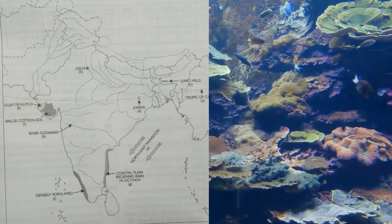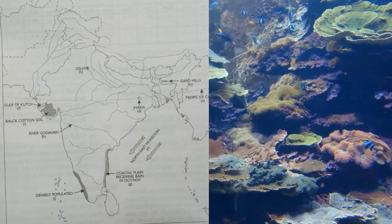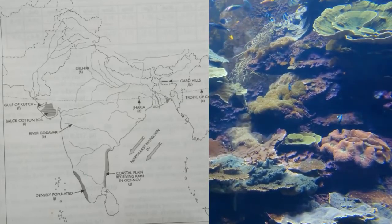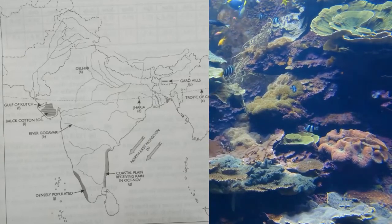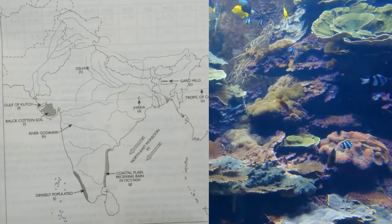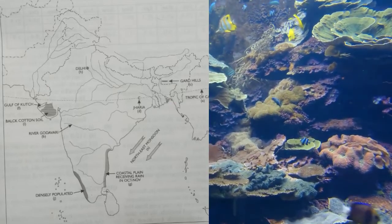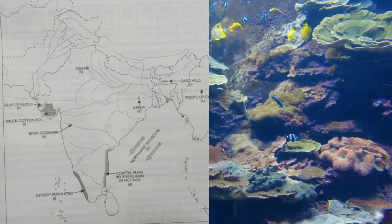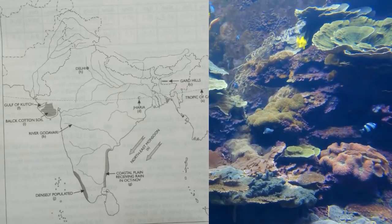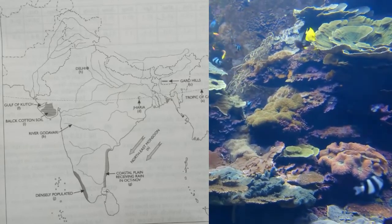'F' — mark and name the Gulf of Kutch. 'G' — mark and name the coastal line that receives rainfall from October to November. 'H' — mark with a dot and name Delhi. 'I' — mark a region with black cotton soil. 'J' — use an arrow to point at the densely populated state in South India.